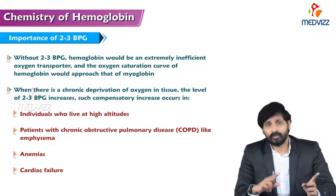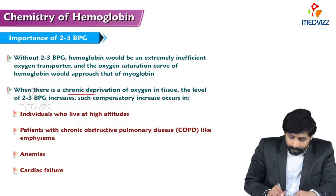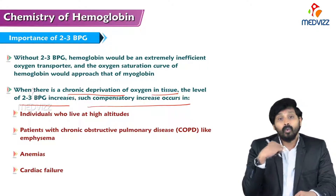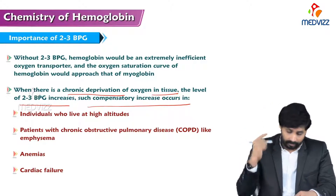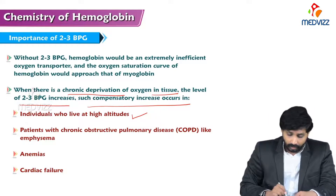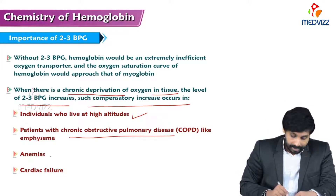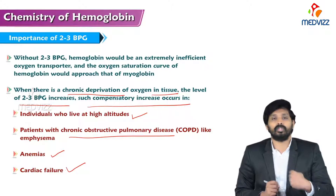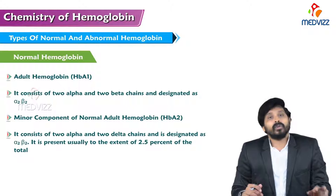When there is chronic deprivation of oxygen in tissues, the level of 2,3-BPG increases. Such compensatory increases occur in individuals living at high altitudes, patients with chronic obstructive pulmonary diseases (COPD) like emphysema, anemias with defective RBCs, and cardiac failure. In these conditions, increased production of 2,3-BPG facilitates more unloading of oxygen at tissue level.